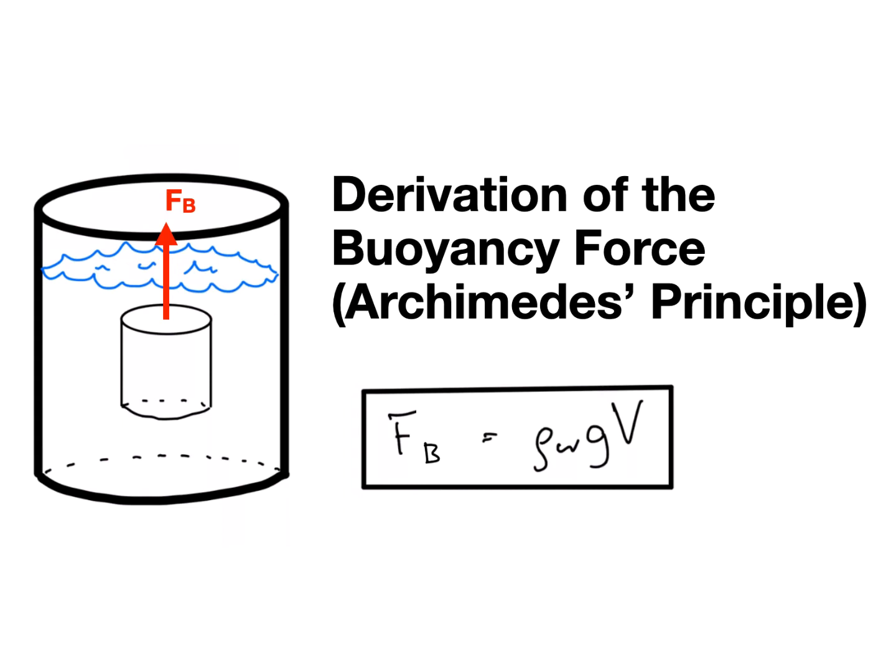So this is something that Archimedes noticed. It's called Archimedes' principle. He postulated that the amount of upward force that a submerged object felt is actually equal to the weight of fluid that that object displaces. Here we're actually going to show this using some principles about forces and using the hydrostatic equation that we derived earlier.